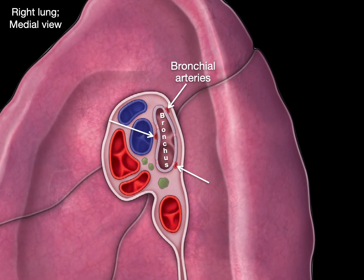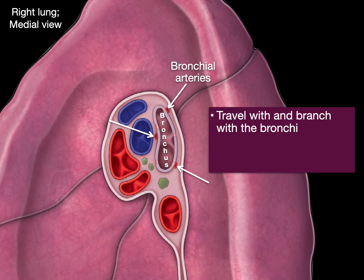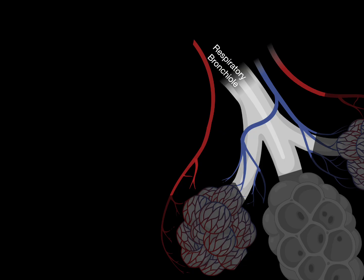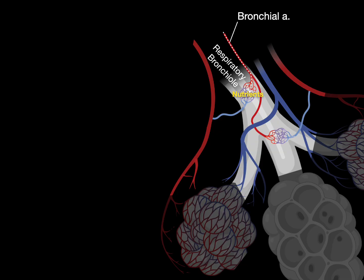The bronchial arteries travel with and branch with the bronchi, and they end at the level of the respiratory bronchioles. The bronchial artery brings oxygen and nutrients to capillaries, and those capillaries supply smooth muscle, cartilage, connective tissue, and so forth — the structural components of the airway.